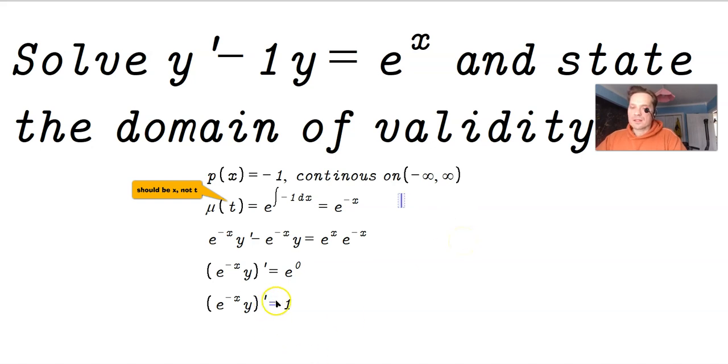To get rid of the derivative, you just integrate on both sides. You write whatever is within the parentheses, get rid of the prime that indicates differentiation, and integrate 1 dx. So then you have e^(-x) · y = x + c.